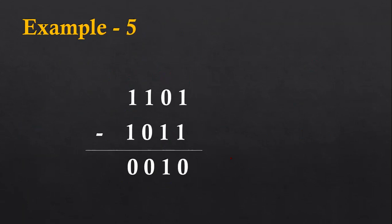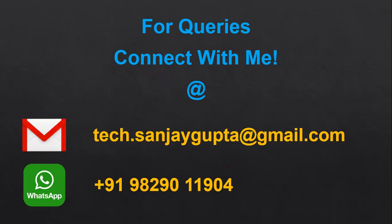Now moving to example number five. One minus one, result is zero. Now I am subtracting one from zero, which is not possible, so looking to the next possible column. I have to perform a borrow operation, so this one will become zero and the borrowed base will be available here as one zero. From one zero I can subtract one, and the result will be one. Then zero minus zero is zero, and one minus one is zero. I hope you have understood how we can perform binary subtraction through this video. If you have any queries, you can connect with me. Thank you for watching this video.